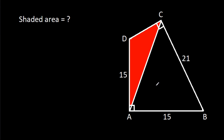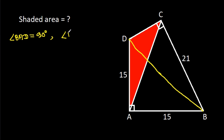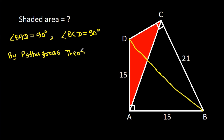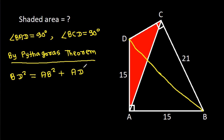If we join BD, then we have angle BAD is 90 degrees and angle BCD is 90 degrees. By the Pythagorean theorem, BD squared equals AB squared plus AD squared, and also BD squared equals BC squared plus CD squared.